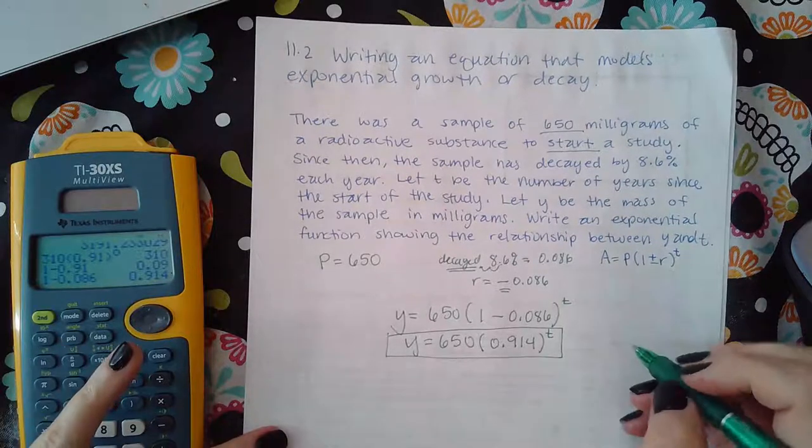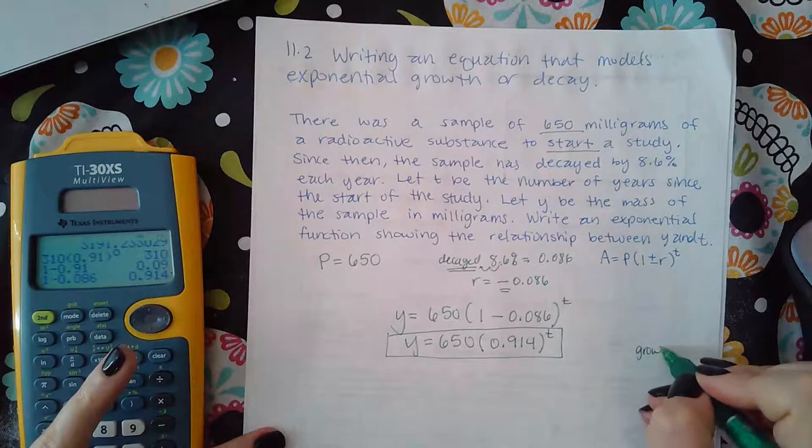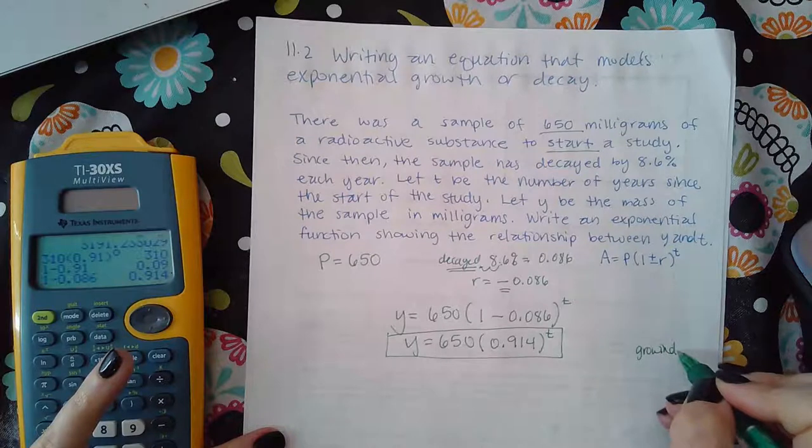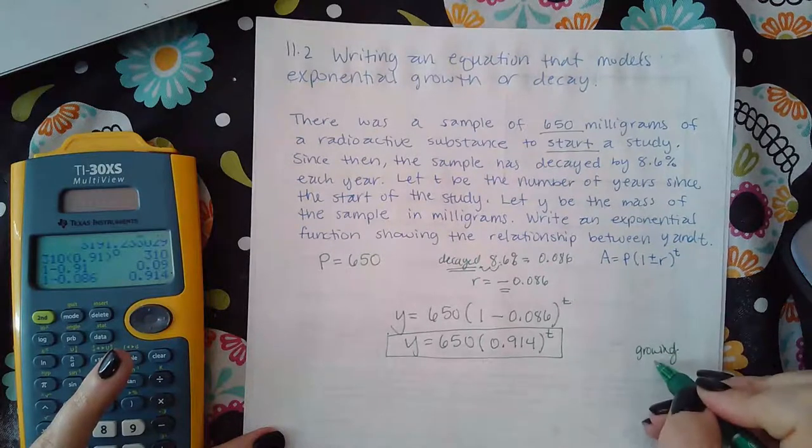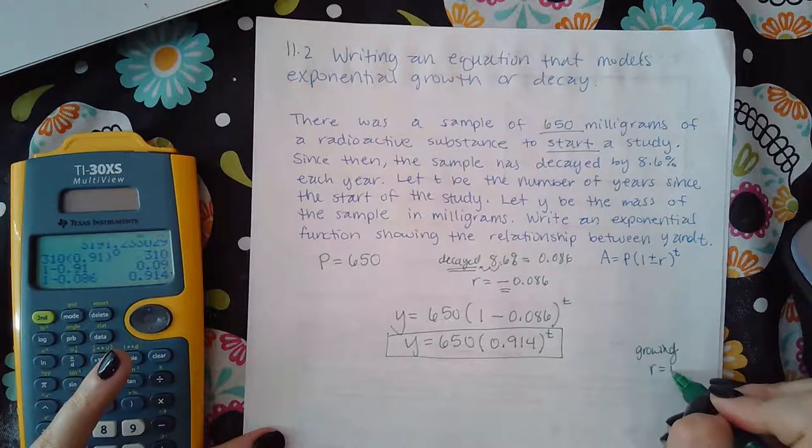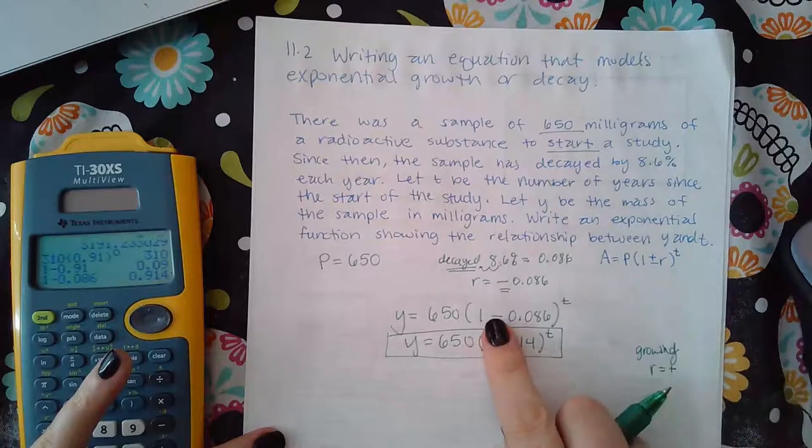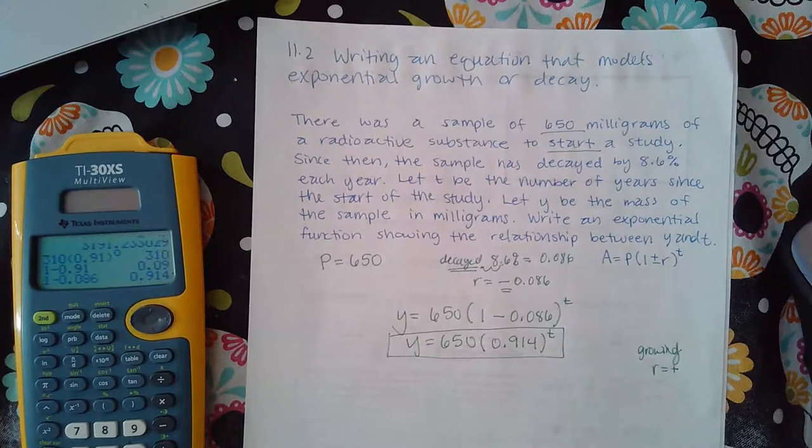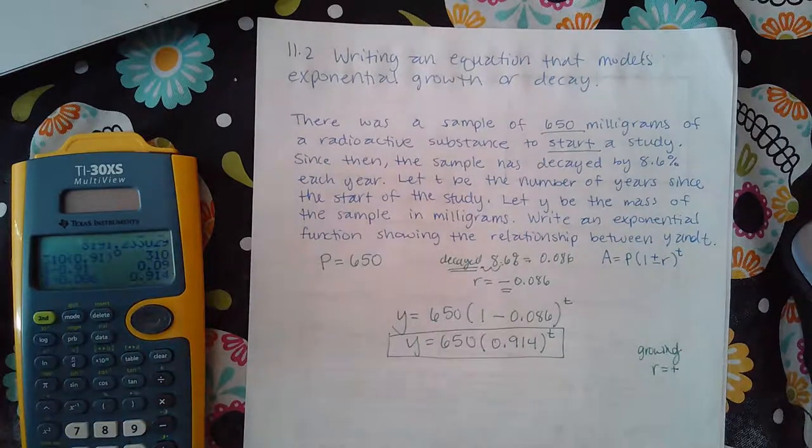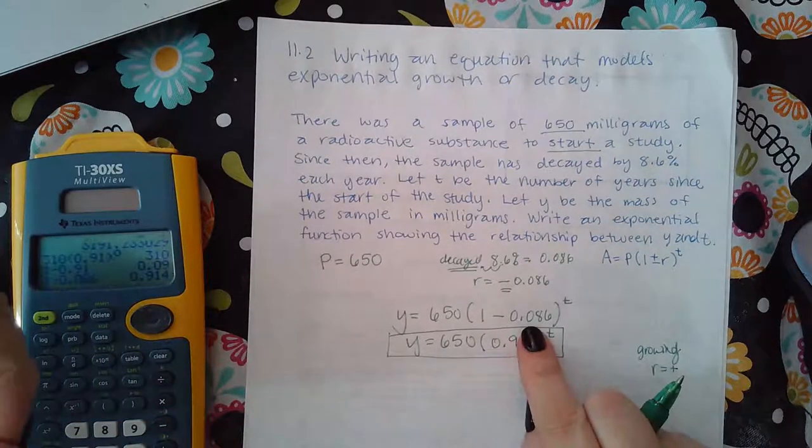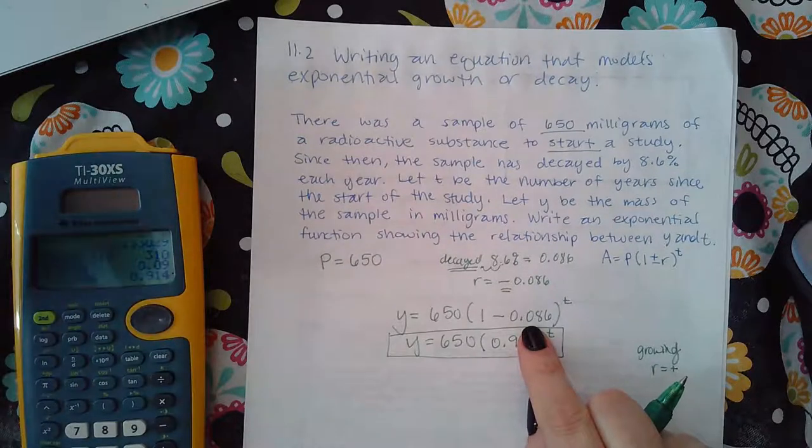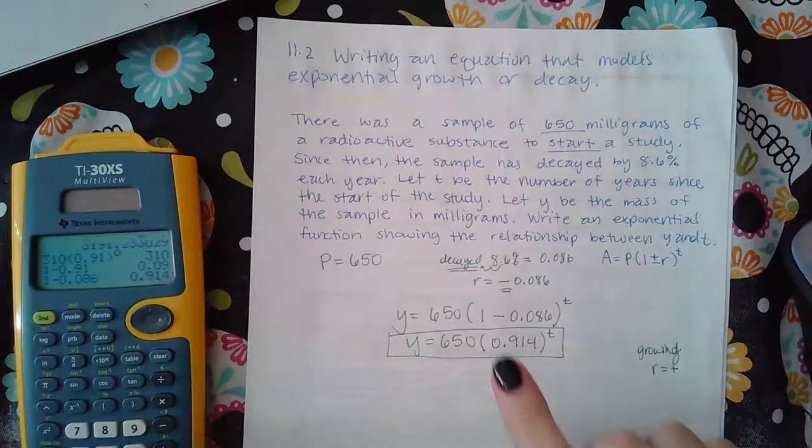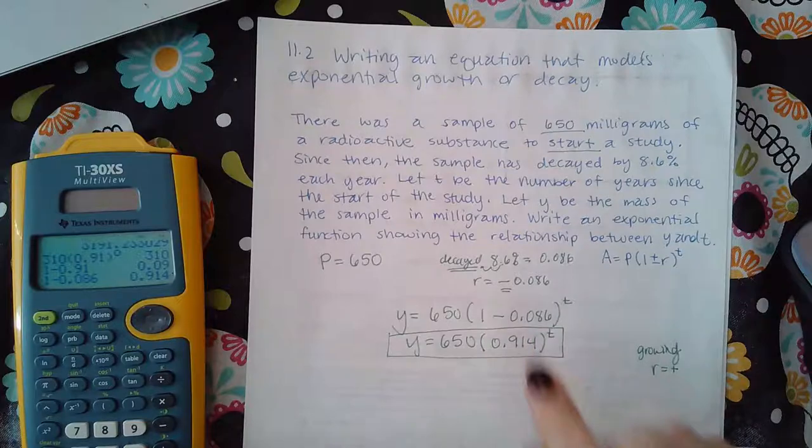Now what if it said that it was growing at a rate of that, right? If it was growing, then the r would have been positive and this would have been one plus whatever that percentage is as a decimal. Okay, so if it says decay, you're gonna minus that rate in decimal form. If it says it's growing, then you're going to add that rate in its decimal form.